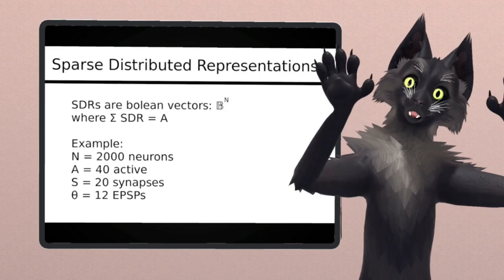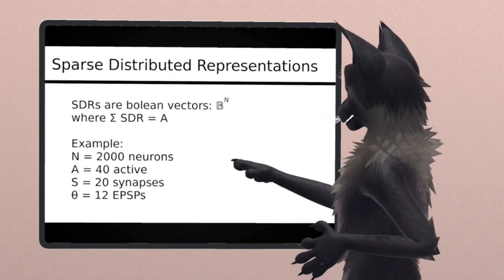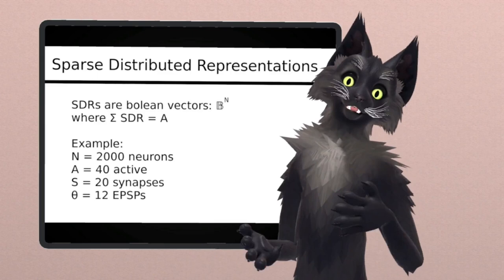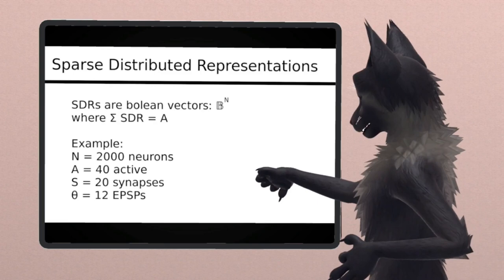Let's analyze some properties of SDRs. I have an example here for us to work through. In our example, we have 2,000 neurons, 2,000 bits in our SDR. 40 of those neurons are active at any moment in time. Those are the 40 ones in our SDR. Each dendrite has 20 synapses, and the dendritic threshold is represented by the symbol here, theta, and that is 12 EPSPs.